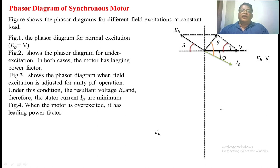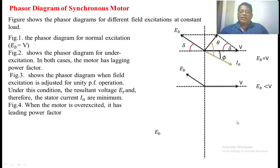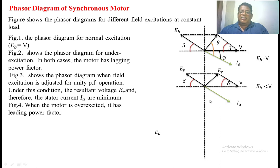If the magnitude of counter EMF Eb equals V, the current taken by the synchronous motor is a lagging current. The excitation where Eb equals V is called normal excitation. If we decrease the field current so that Eb < V — under-excitation — we find the phasor sum to get Er, and the current lags Er by fixed angle theta. In this case, the current also lags V by angle phi. So under normal excitation or under-excitation, the synchronous motor operates at a lagging power factor, taking reactive power from the supply.